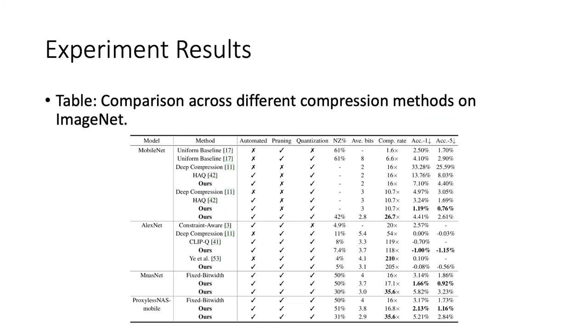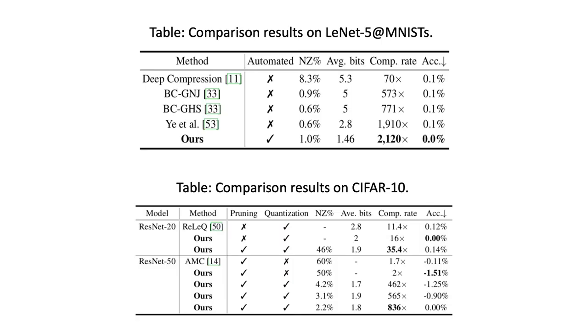On ImageNet classification, our method has higher compression rate for similar or even better accuracy. Experiment results on other datasets also validate the effectiveness of our method.